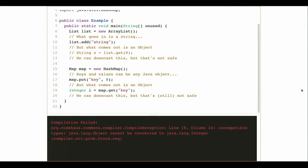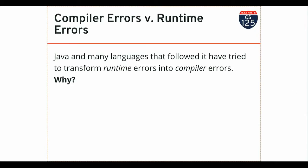What we'd like is — and this goes back months to when we talked about how the Java compiler works — we'd like to turn, as much as possible, runtime errors into compiler errors. Things that might cause your app to crash when people download it from the Play Store, or cause a new service to crash when you're demoing it trying to get VC funding — we'd like to take these errors and change them to compiler errors, because those are errors you're going to have to fix.